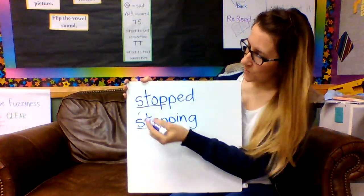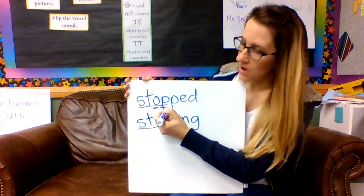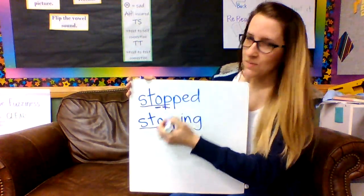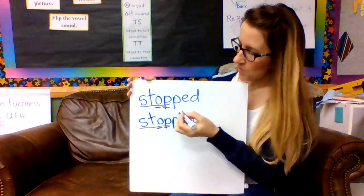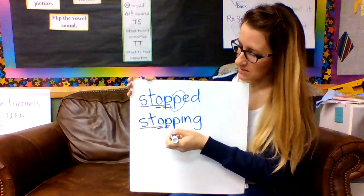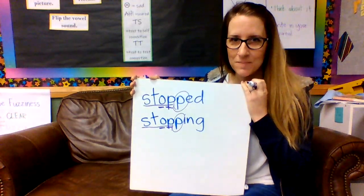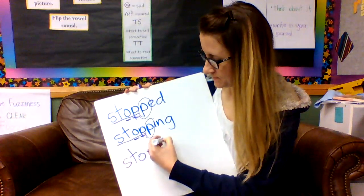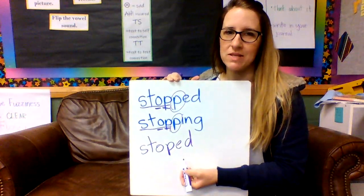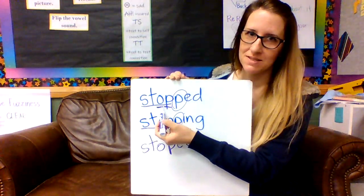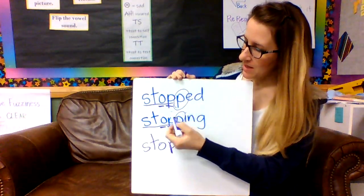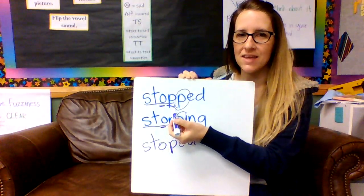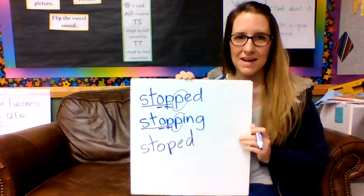Stop is a special word because it has one vowel and one consonant. The vowel is O and the consonant is P — one vowel and one consonant. When we have a base word that has one vowel and one consonant at the end, we know we need to add an extra consonant to protect that short vowel. If we did not add another consonant, that E cannot reach over and touch the O. That is what we need to do — double up that P before we can add -ed and -ing.